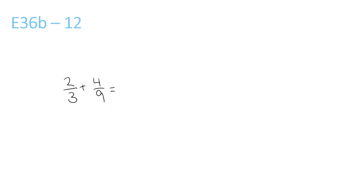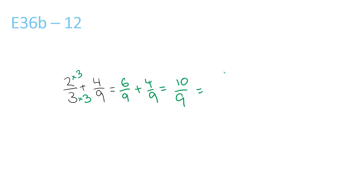The LCM of 3 and 9 is 9, so you times the top and bottom by 3 of this one to get 6 over 9, plus 4 over 9. Now you have this — 6 plus 4 is 10 over 9. 9 goes into 10 once, remainder 1 over 9.